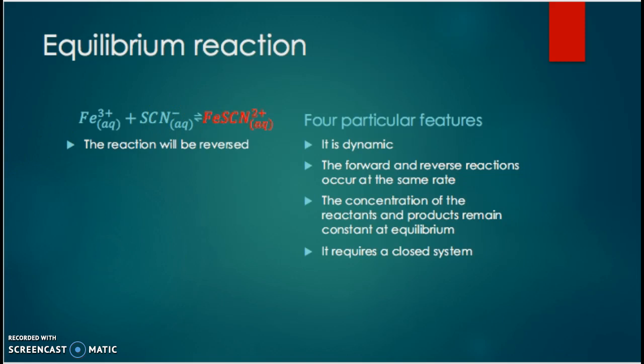An equilibrium reaction has four particular features under constant conditions. It is dynamic, which means that it is continuously reacting — there will always be reactants formed, and there will also always be products formed. The forward and the reverse reactions also occur at the same rate, so the rate to the right is equal to the rate to the left. The concentration of the reactants and products remain constant at equilibrium, and it also requires a closed system, so that none of the reactants or products escape from the reaction mixture.